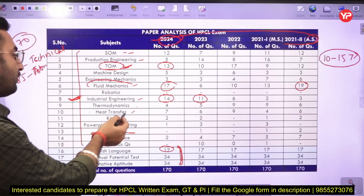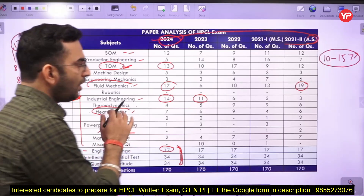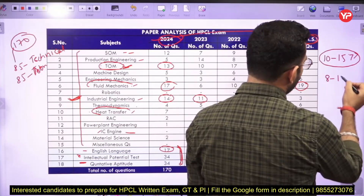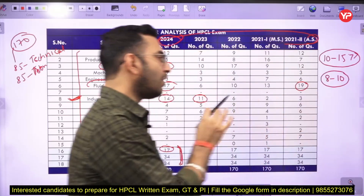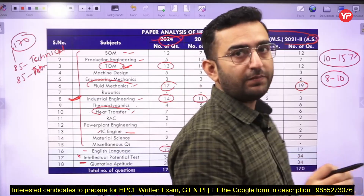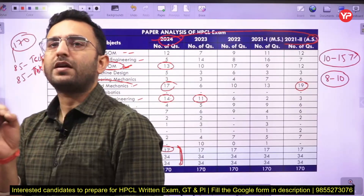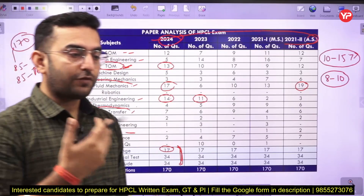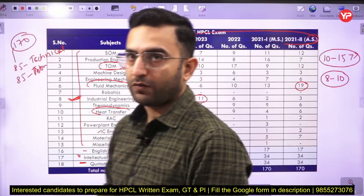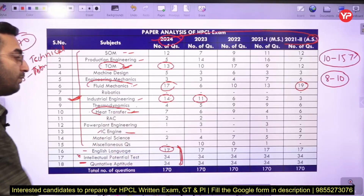Heat transfer is also a very important subject, similar to fluid mechanics. The number of questions asked from heat transfer can vary up to 8 to 10, so about 10 percent of the paper comes from heat transfer. In heat transfer, focus specifically on the theoretical section from the convection part and the heat exchanger part. Some basic numericals can also be asked from the conduction part — calculating the total amount of heat transfer, rate of heat transfer, and overall heat transfer coefficient in conduction and convection problems.